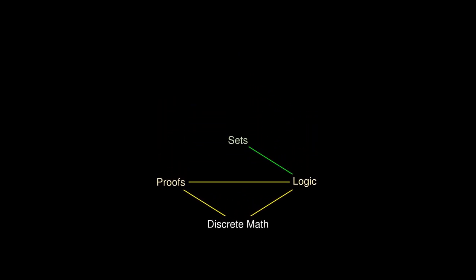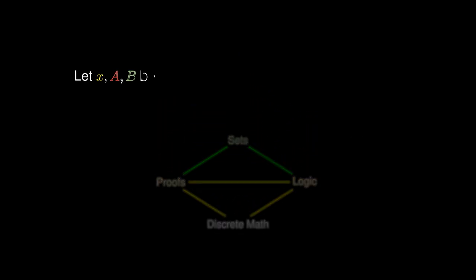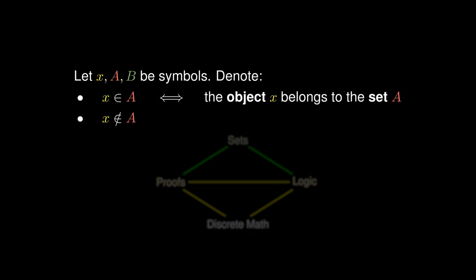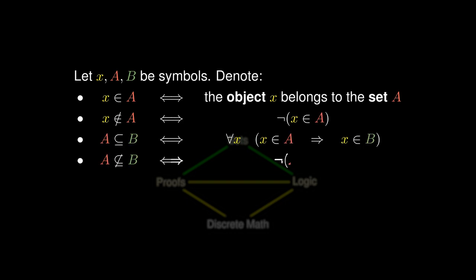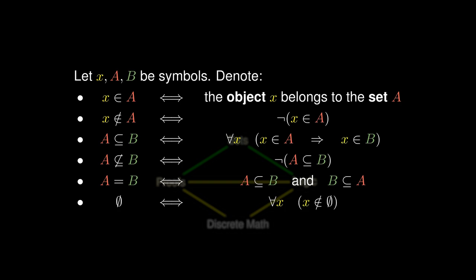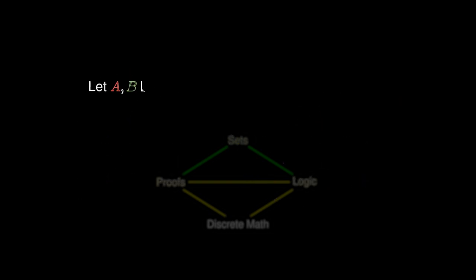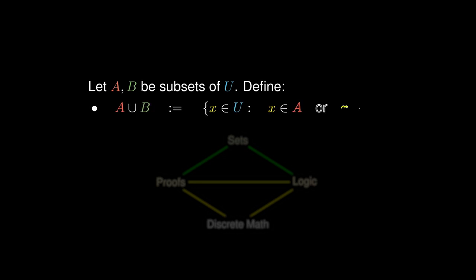Combining the basic notions in logic and proofs allows us to describe sets. We say that x is an element of A to mean that the object x belongs to the set A. We say that A is a subset of B precisely when any element of A must belong to B. We say that two sets A and B are equal when they are both subsets of each other. The empty set is defined as the set with no elements. With these notions, we can define the union of two sets, which contains any element that belongs in at least one of A or B.